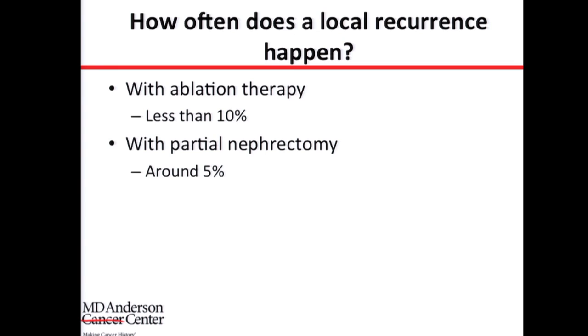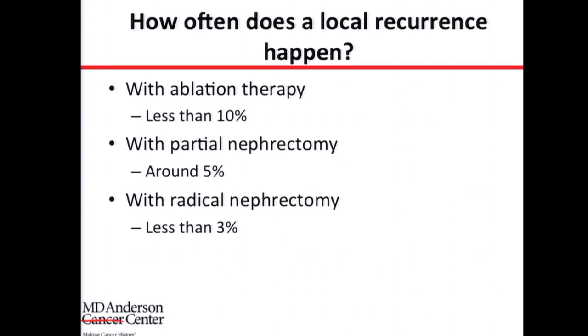If you treat a large tumor with ablation therapy, the chances of recurrence are higher. Now we try to limit ablation therapy to smaller tumors, and with that, we achieve a higher success rate. If you treat a tumor less than two or three centimeters with ablation, the recurrence rate should be less than 5% — it's all about patient selection. The local recurrence rate after a partial nephrectomy should be around 5%, and with radical nephrectomy, it should be less than 3% because the whole kidney has already been removed.